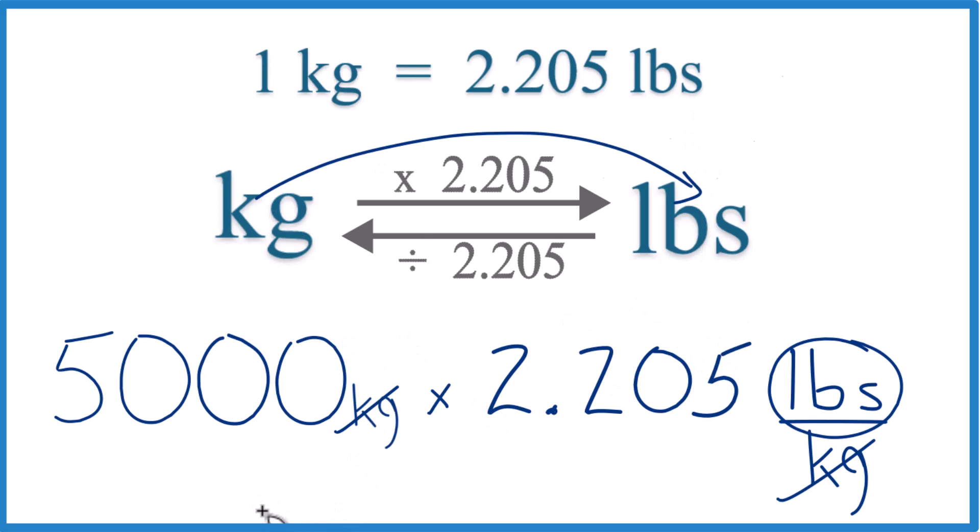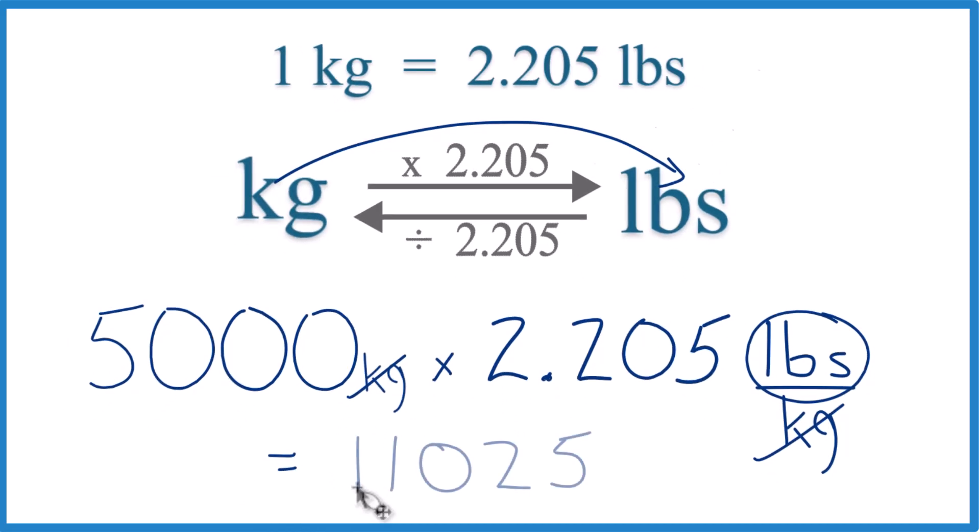So when we do the math, we end up with 11,025 in the units. That's going to be pounds there, 11,025 pounds. So that's how you convert 5,000 kilograms to pounds.